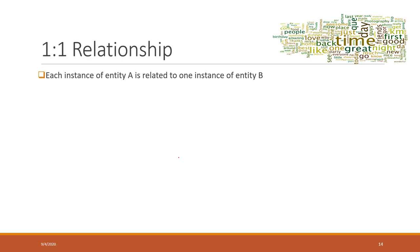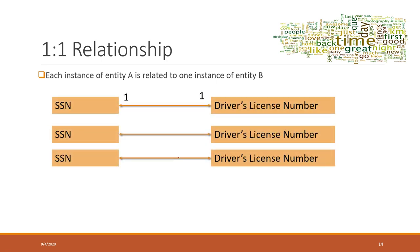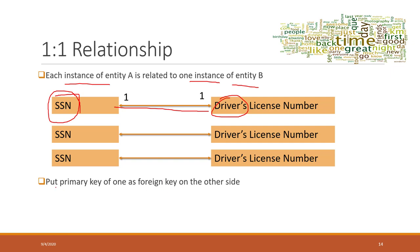In a one-to-one relationship, all the rows in table one have one corresponding record in table two. A common example is a social security number and a driver's license. In a perfect world, each person has one SSN and also only one driver's license number, so that is a one-to-one relationship.